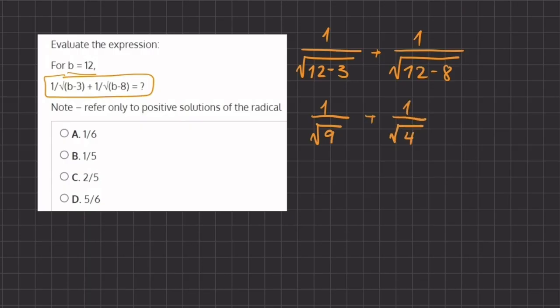Alright, now we have a note here that says to refer to only the positive solutions of the radical. Now we know that in a radical, if we had radical 9, we know that it has two solutions. It could be a negative 3 or a positive 3, but they only want us to refer to the positive solutions of the radical.